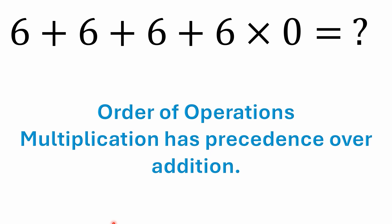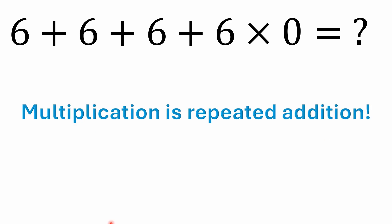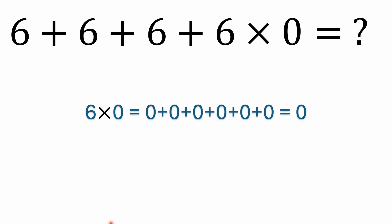Again, I've mentioned the order of operations. I know I've beaten this like a dead horse in some videos, but the reason I concentrate so much on it is because I see a real lack of knowledge — people have forgotten what they were taught. Multiplication has precedence over addition because multiplication is repeated addition. Think of multiplication as shorthand for addition. It's a lot easier to write six times zero than to write out six zeros being added together.